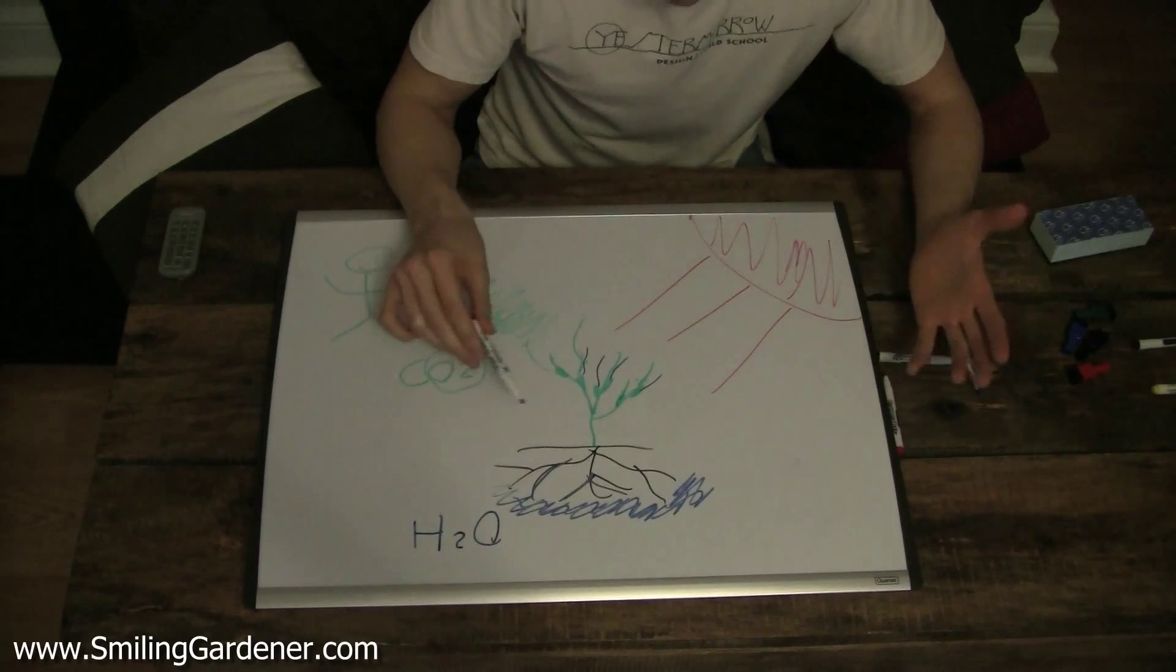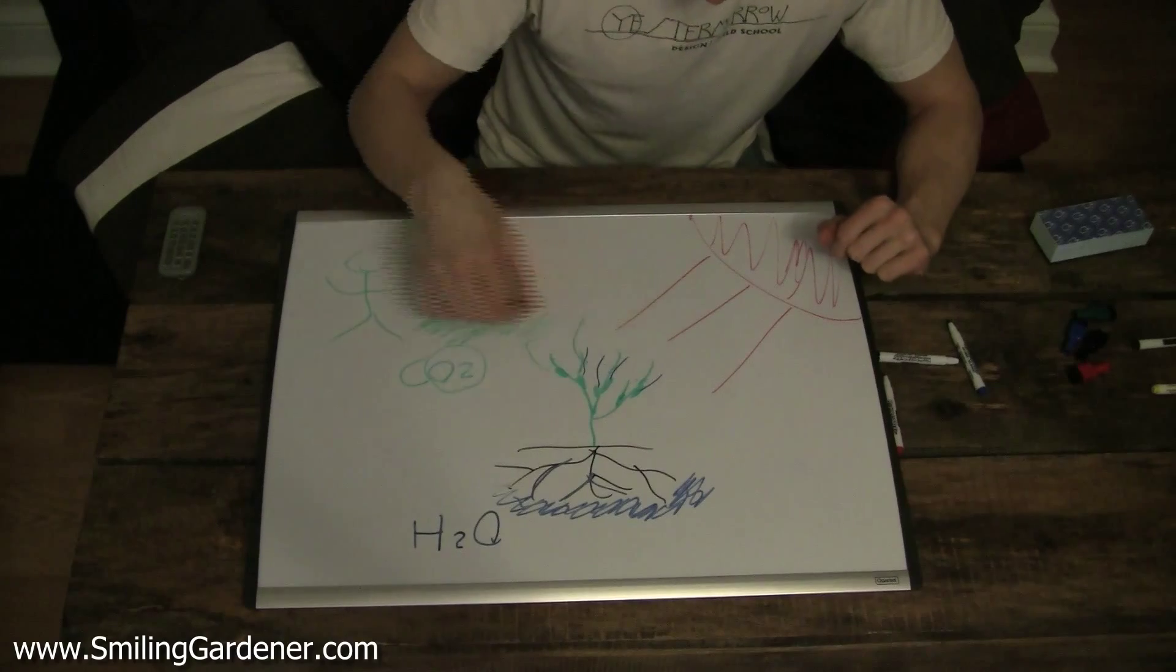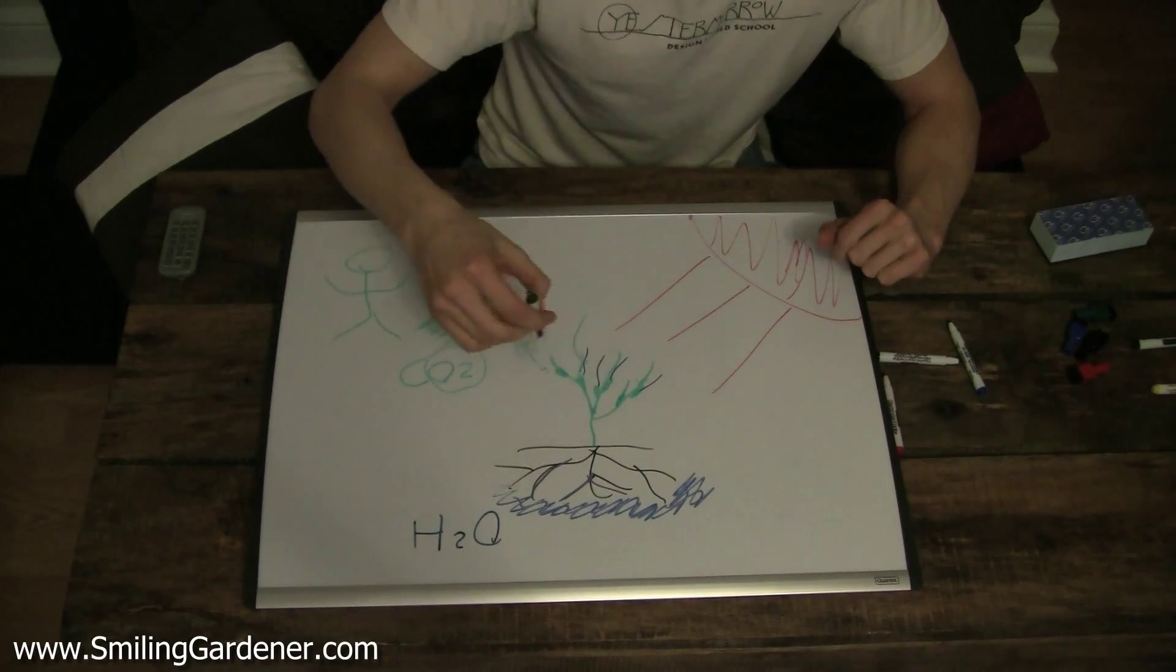And basically it's sugar that it creates, carbohydrates, various kinds of sugar. This is really how a plant eats, this is how a plant gets bigger.